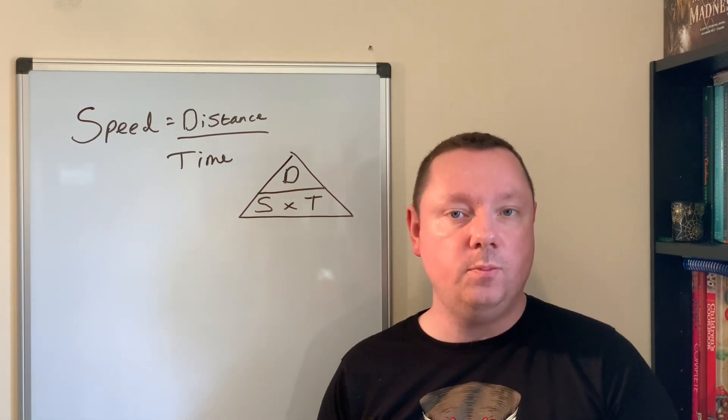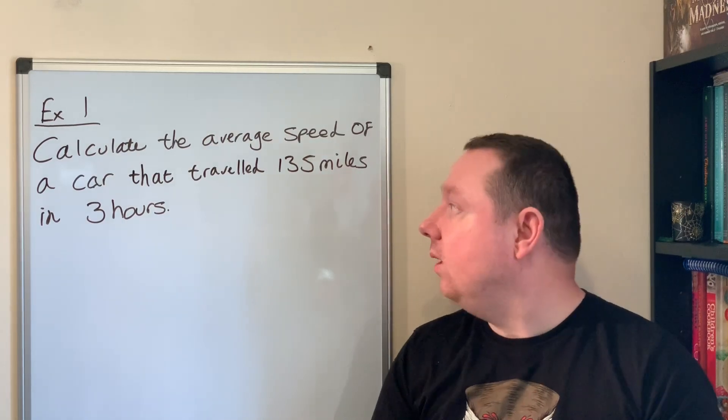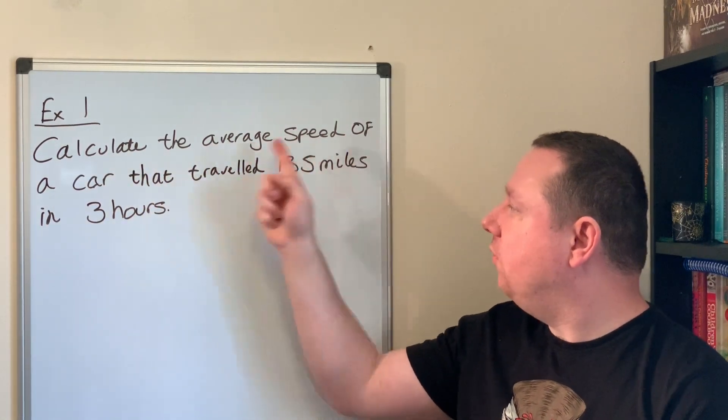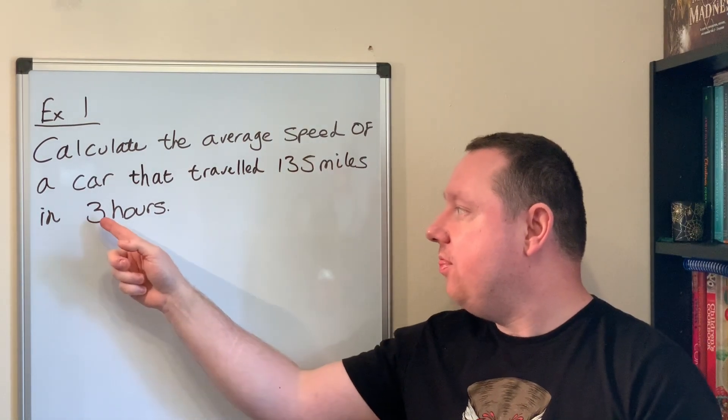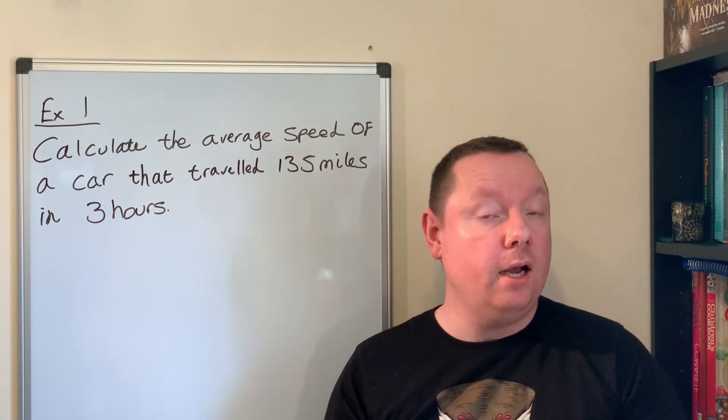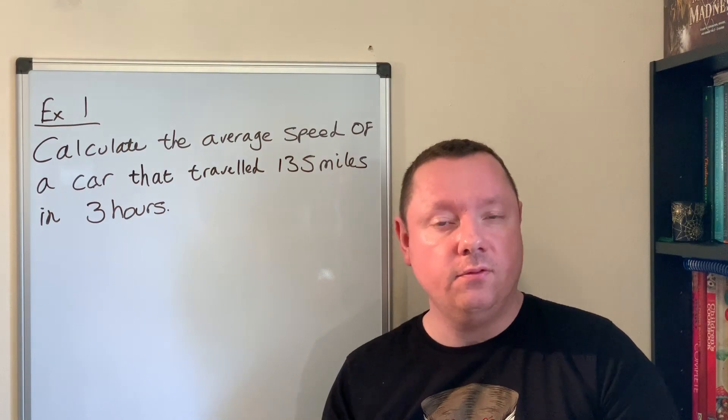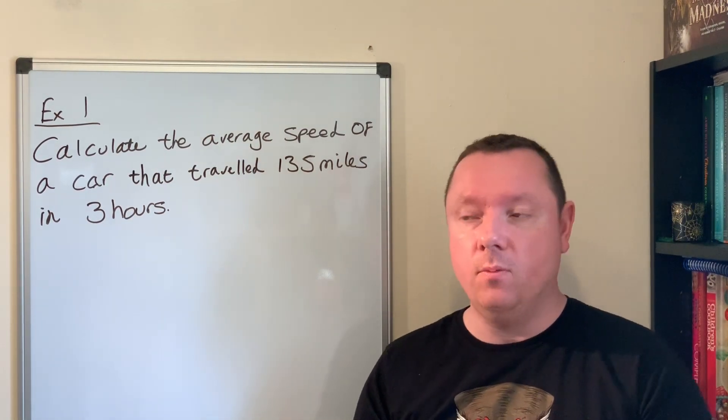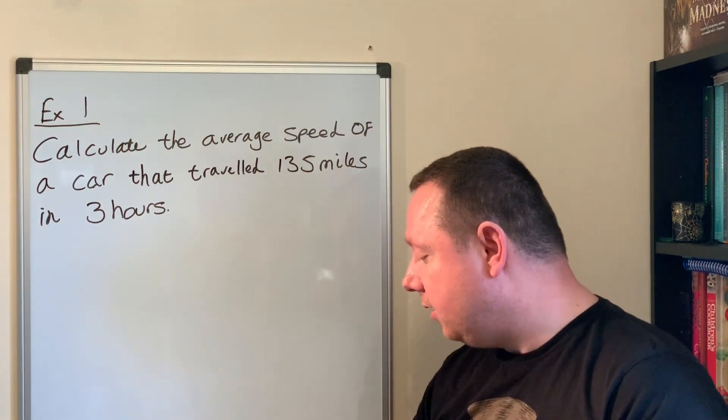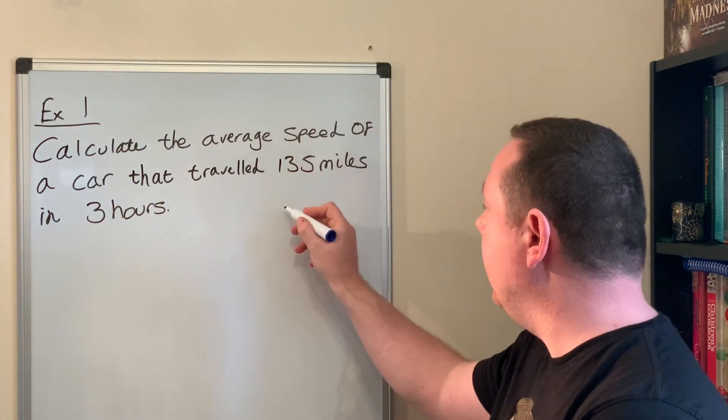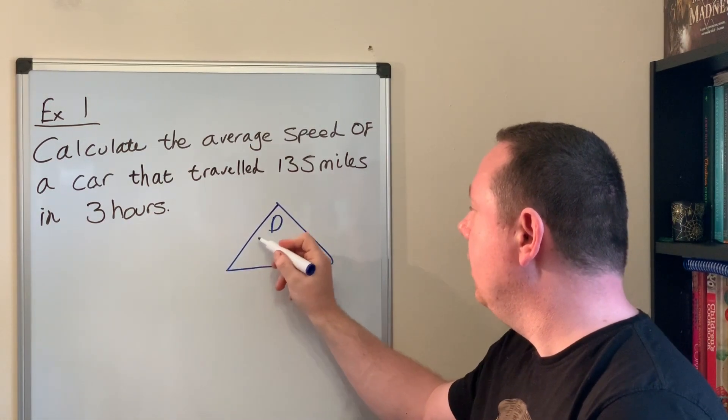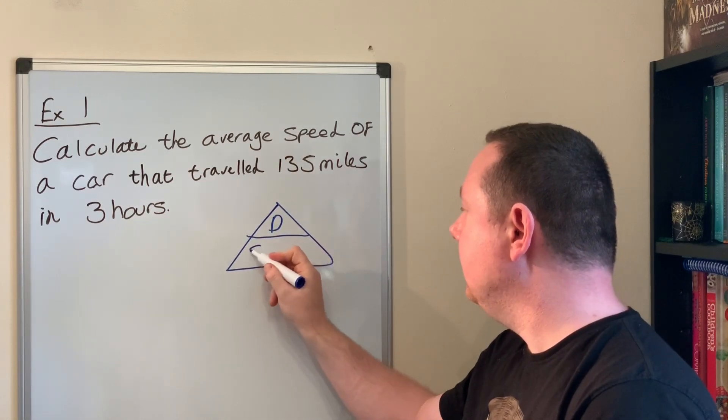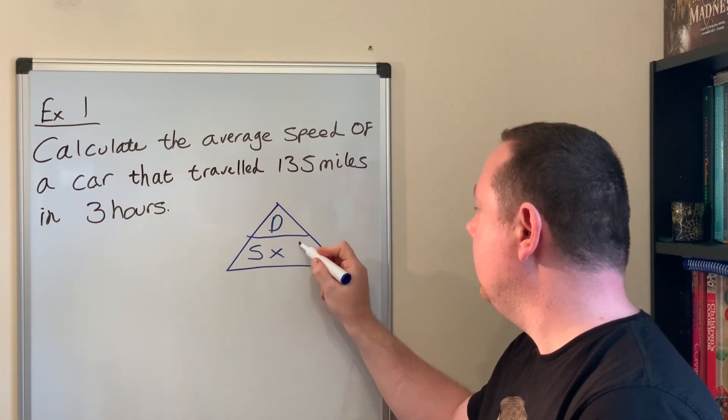Let's start with a simple example. Example one: Calculate the average speed of a car that traveled 135 miles in three hours. We don't need to remember separate formulas - we always start by drawing our triangle. Remember, distance D goes at the top over S times T.